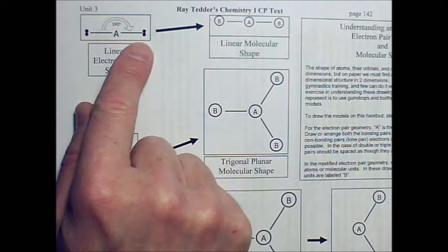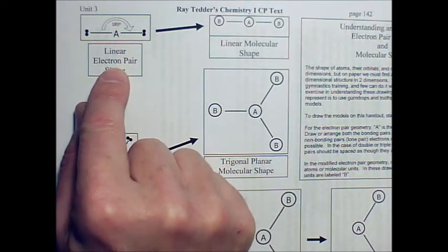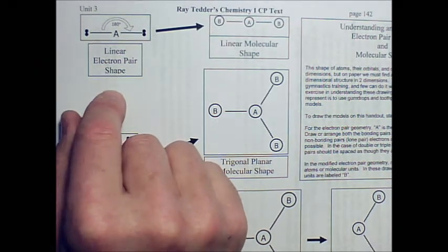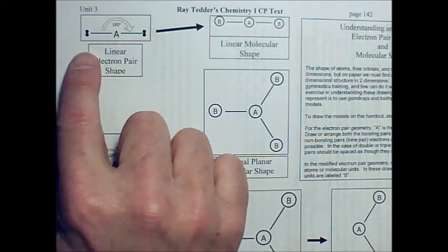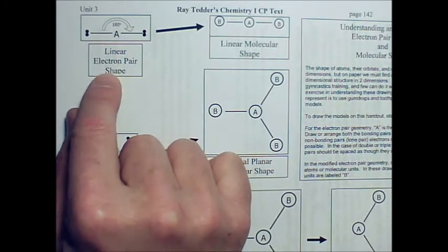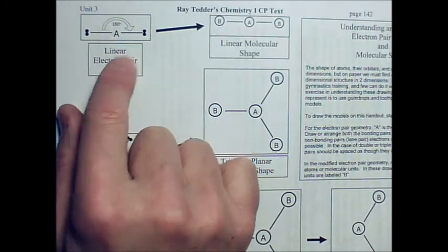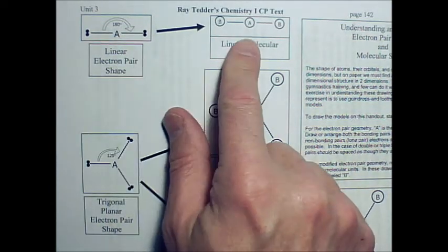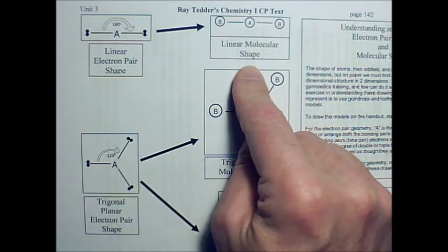So, with carbon dioxide, we started out with this linear electron pair shape. Now, you have to always do your sharing arrangement, Lewis dot formula, Lewis formula, and then you can do your electron pair shape. But this is a general representation of a linear electron pair shape, and from that, we get this linear molecular shape.